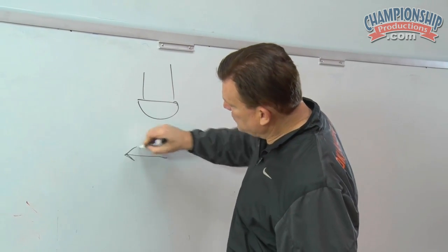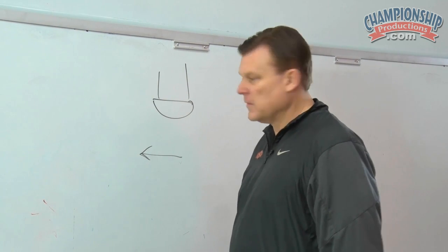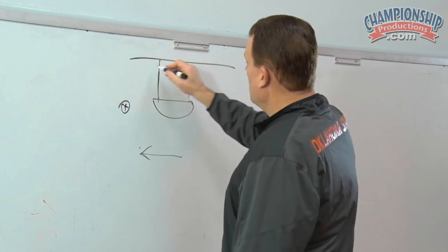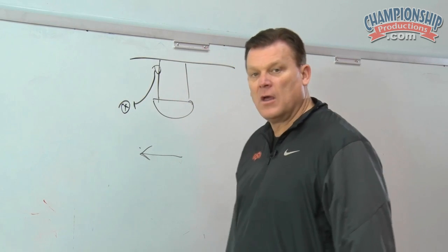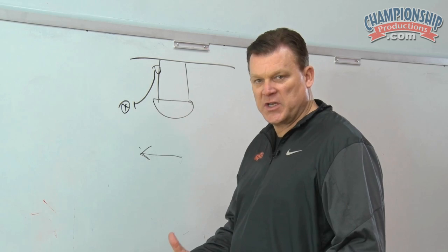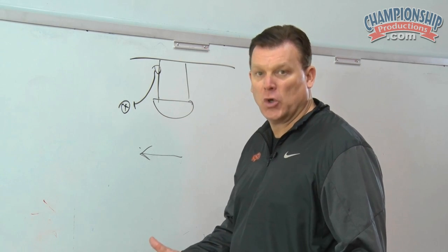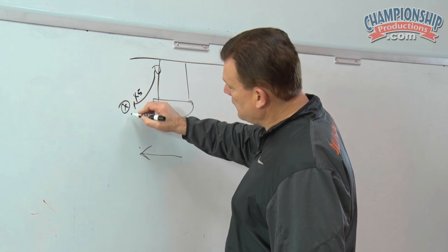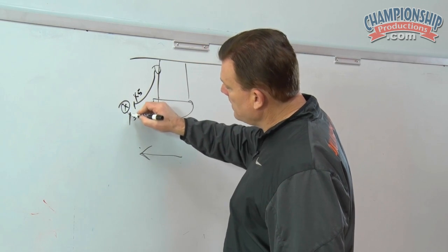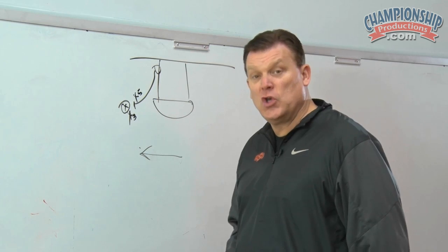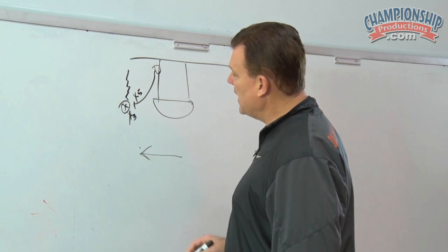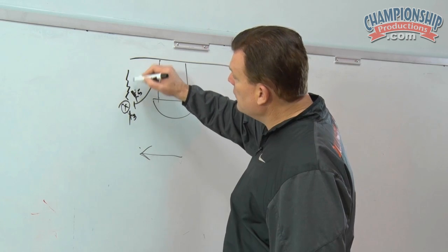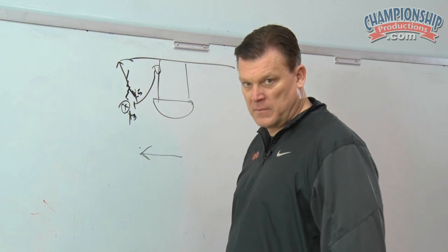Any time the ball is entered to the left side of the floor and teams run into a ball screen, this will always be what we consider a 'down' — we use the term 'blue.' So X5 is there and we shift. X3 shifts and makes him use the screen, forcing the ball handler left. We're aggressive in this — we're off the screener's hip, forcing them to the corner. That is a blue.